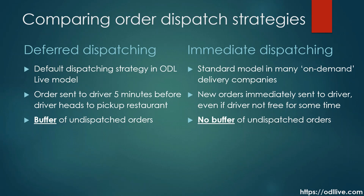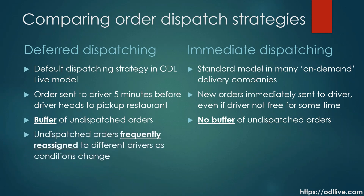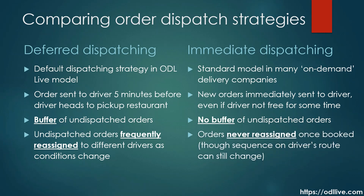With deferred dispatching, undispatched orders are frequently reassigned to different drivers as conditions change — for example, when new jobs are created or unexpected delays occur. This makes the delivery network more robust, as a late-running driver can have their undispatched orders reassigned to a different driver. The drivers themselves only see dispatched orders, so they are unaware of this ongoing reassignment. On the other hand, with immediate dispatching, orders are never reassigned to a different driver after order creation. The sequence of orders on a driver's route can still change, but not the assignment of order to driver.